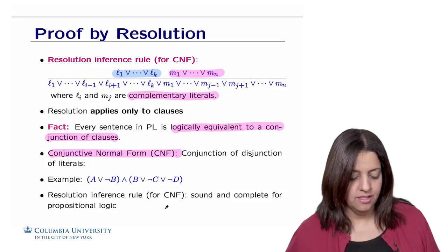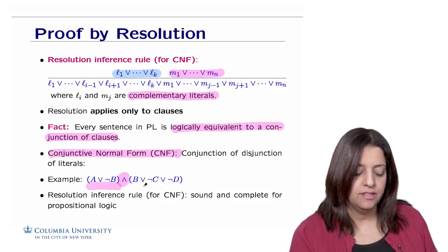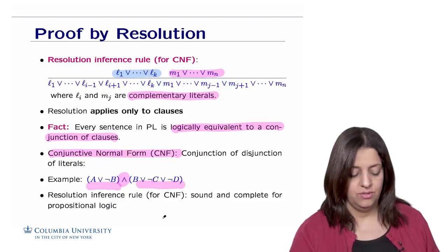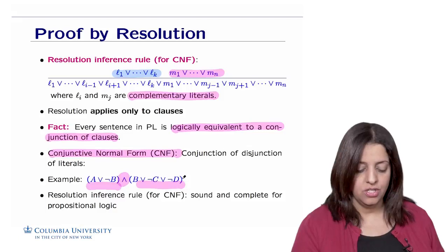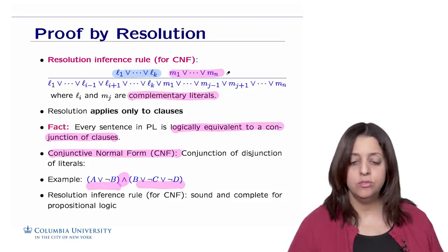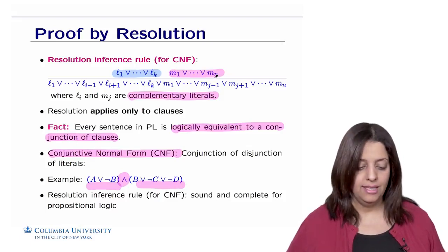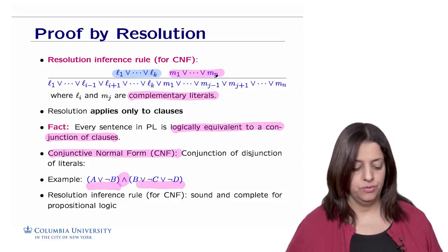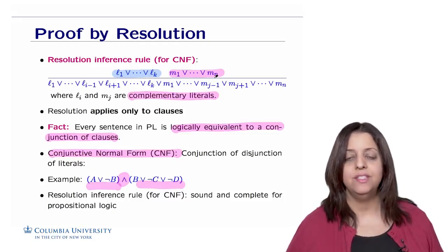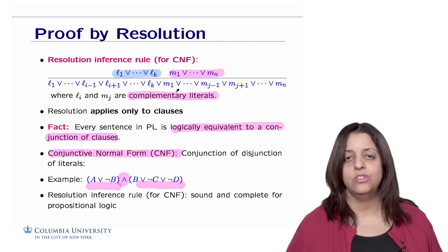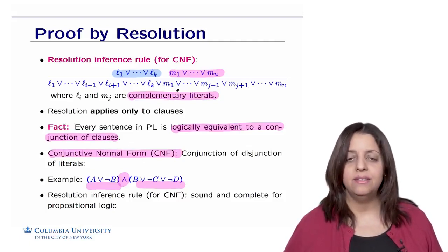Every sentence in propositional logic is logically equivalent to a conjunction of clauses, called Conjunctive Normal Form (CNF) — a conjunction of disjunctions of literals. For example, (A or not-B) and (P or not-C) is a CNF. Furthermore, resolution inference — which eliminates all complementary literals across clauses — is both sound and complete. You can verify soundness via truth table, and the completeness proof is available in the textbook.